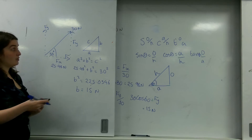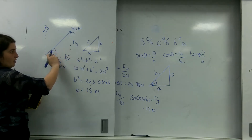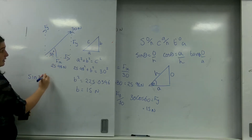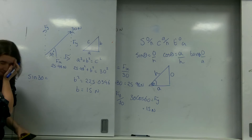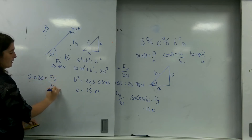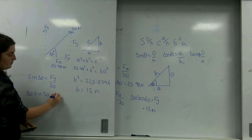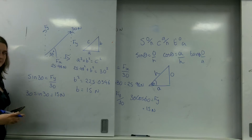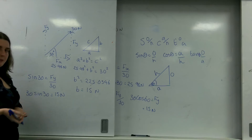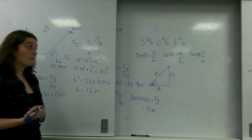Or of course I could use trigonometry again. I know that Fy is the opposite side, so I could have done sine 30 equals Fy over 30. So 30 sine 30 equals 15 newtons. There are many ways to take components, and it all hinges on trigonometry.